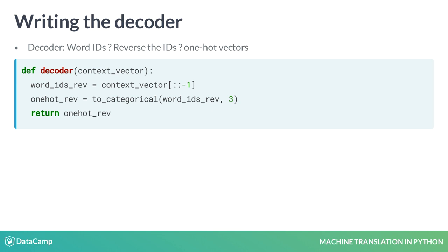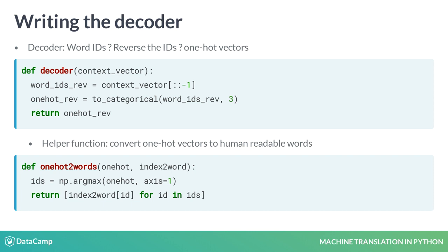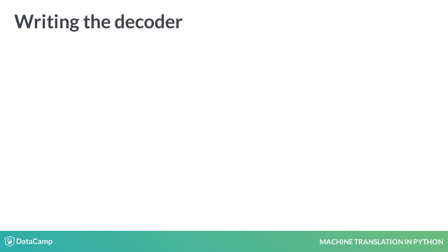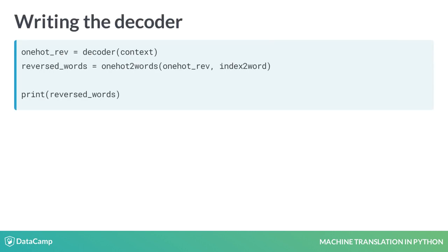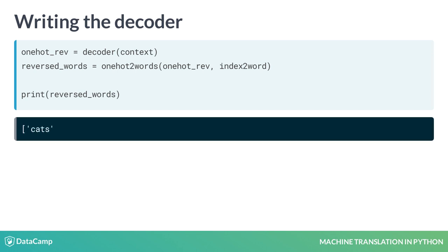You also need a helper function, one-hot-to-words, which will convert a set of one-hot vectors to human-readable words. The one-hot-to-words function takes in an array of one-hot vectors and a dictionary, index-to-word, which maps a word ID to a word. Consequently, index-to-word is the reverse dictionary of word-to-index used in the encoder. Finally, you can compute the decoder output by calling the decoder function with the context vector as an argument, and obtain the reversed words by calling the one-hot-to-words function with the correct arguments.